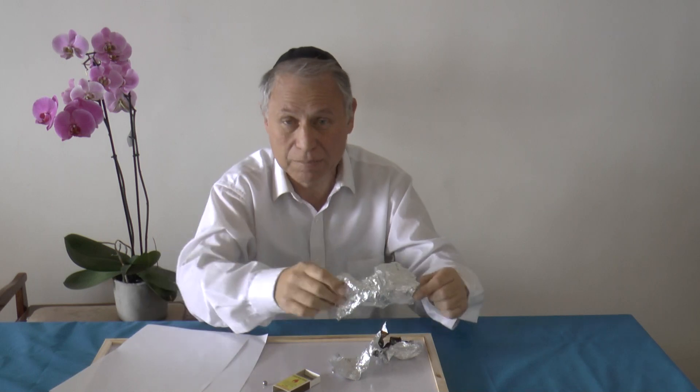You need an empty matchbox, a piece of tin foil that you can get from a candy wrapper or in the kitchen. Any tin foil can be crumpled up.